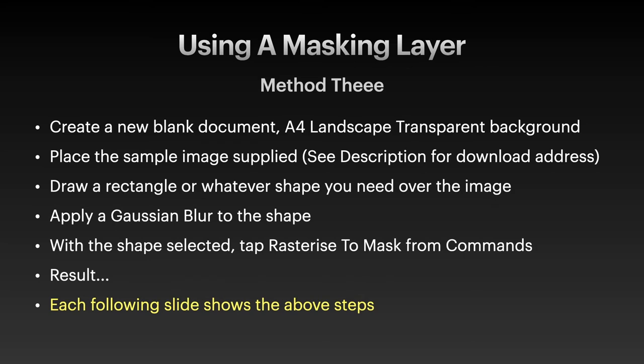Method three is slightly different — this is using a masking layer. On the iPad, this is not the same as the desktop; it's slightly different. Again, create a new blank document, place the sample image. Now draw a rectangle or whatever shape you need over the image — it'll blank it out completely. Apply a Gaussian blur to the shape and adjust this to suit your needs. You'll see that the one I've got is slightly darker on the outer edges — it's kind of a reverse vignette. With that shape selected, tap 'Rasterize to Mask' from the commands drop-down.